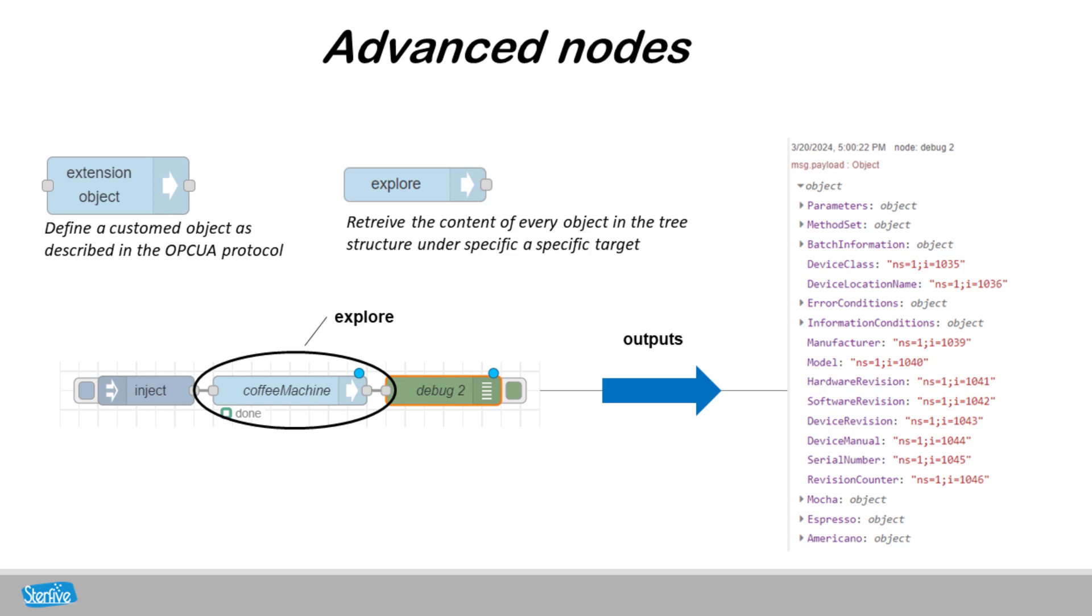Unlike the other nodes, the explore node is a unique feature of OPC UA for Node-RED. Compared to the browse node, which only gives the next elements of the tree structure, the explore node makes a profound research under the target.